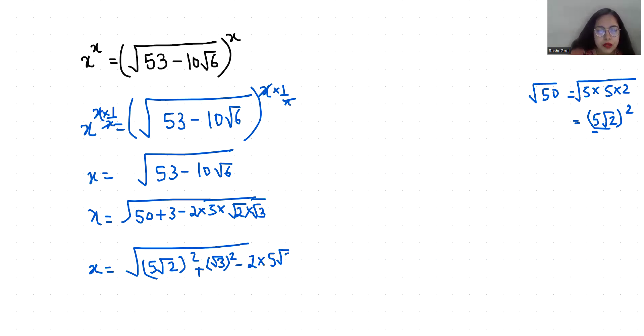Now it becomes a squared plus b squared minus 2ab, so that is an identity a minus b whole squared, where a is 5 root 2 and b is root 3. The square root and the square cancel out.